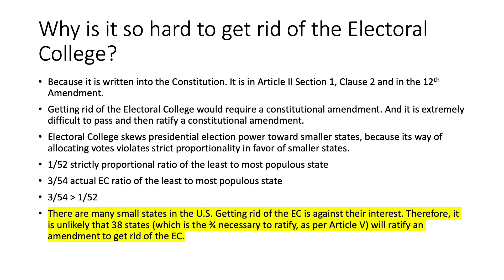Why is it so hard to abolish the electoral college? Because it is written into the Constitution — specifically Article 2, Section 1, Clause 2, and the 12th Amendment. Getting rid of it would require a constitutional amendment, which is extremely difficult to pass and ratify. Additionally, the electoral college skews presidential election power toward smaller states because its method of allocating votes violates strict proportionality in their favor.